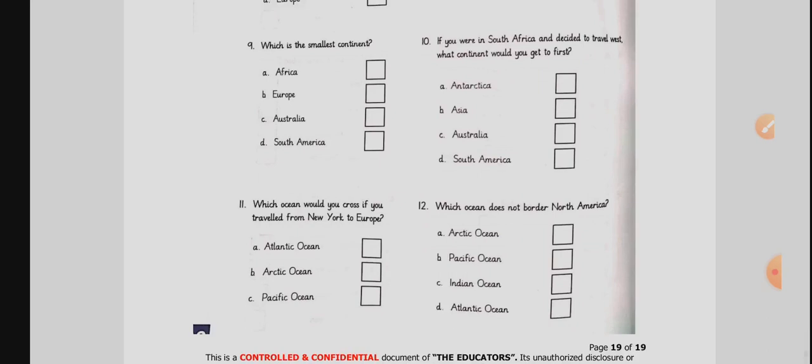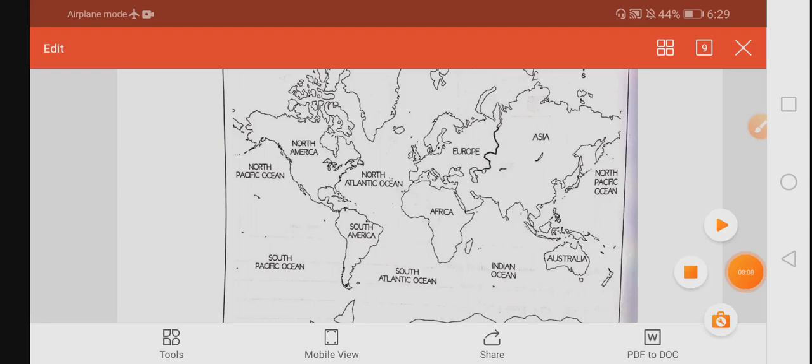If you were in South Africa and decided to travel west, what continent would you get to first? Okay, again, you will have to open the map. You will take the help of the compass rose. It will guide you and then you will find out the answer. Which ocean would you cross if you travel from New York to Europe? New York is in America. Please keep it in mind. Please have a look at it, student. Here is America.